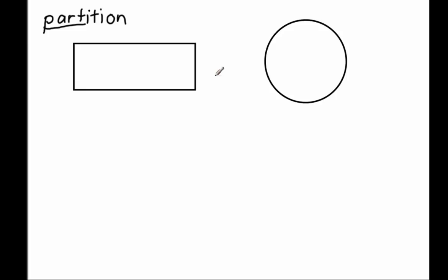Let's take a look. Here we have a rectangle, and if we partition this, we want to break it into two equal shares. I'm just going to break it once, so I'm going to draw one line — going straight down like this. As you can see, I have broken this whole rectangle into two shares: one share here and another share here. These shares are equal — there's the same amount in this share as there is here.